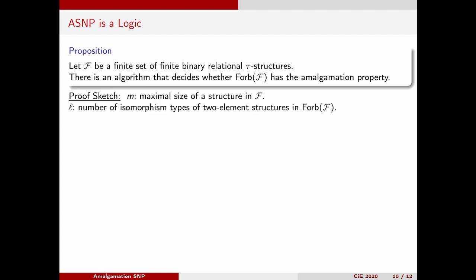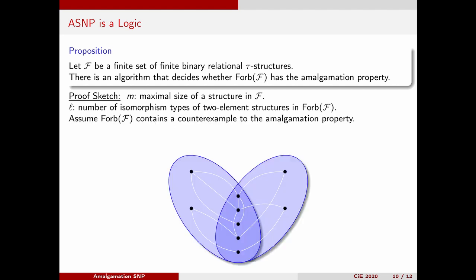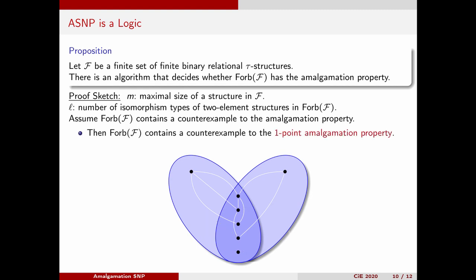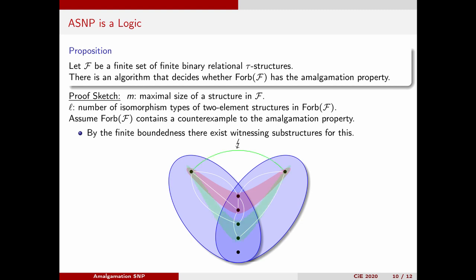Suppose that F is a finite set of finite binary relational structures. Let M be the maximal size of a structure in F and let L be the number of isomorphism types of two-element structures in FORB(F). Suppose that FORB(F) does not have the amalgamation property. It is well known and easy to show by induction that then there is also a one-point amalgamation diagram that fails — a one-point amalgamation diagram is one where B1 and B2 have precisely one element more than A. For each isomorphism type between the extra points of B1 and B2, the resulting structure is not in FORB(F), so there must be a copy of a structure in F embedding into the respective structure. Already the substructure of the amalgamation diagram of size at most L times (M minus 2) plus 2 containing all those copies fails. So we can check the amalgamation property by checking all one-point amalgamation diagrams up to this size.